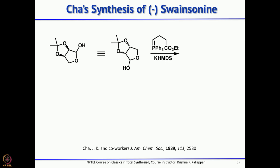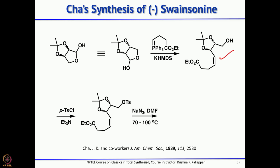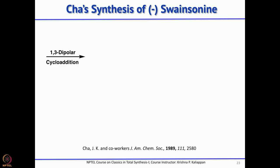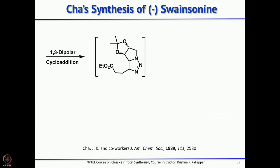The synthesis reported by Cha started with D-erythrose. A Wittig reaction gives the cis double bond, and the primary alcohol is converted into a tosylate or mesylate as a good leaving group, then treated with sodium azide to give the corresponding azide. When you do this SN2 reaction you have to heat it around 70–100°C, and at that temperature not only does the SN2 displacement take place, but also an intramolecular 1,3-dipolar cycloaddition occurs.